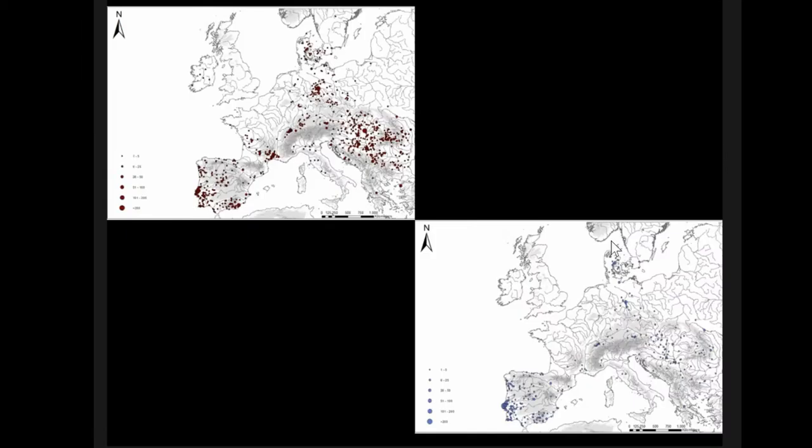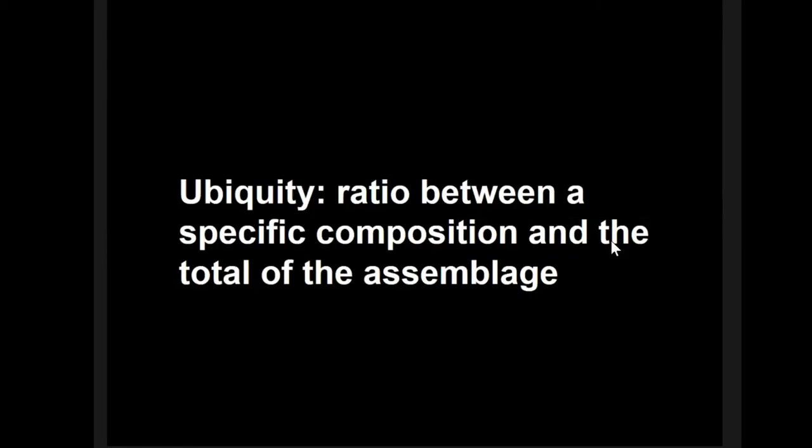If you compare the two maps, you can maybe start to see a difference in France, but it's really hard to capture the difference between the distribution of a specific composition and the distribution of the total assemblage just by eye. So with the Oxford group, we developed a simple tool called ubiquity analysis.